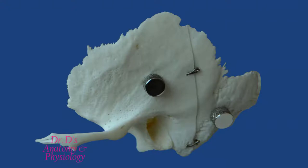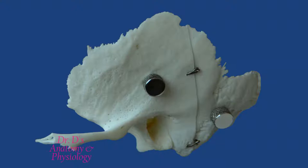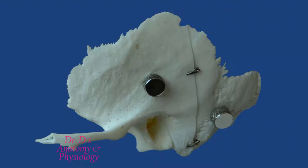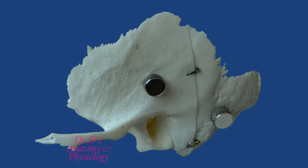The temporal bone is going to be associated with your special senses of hearing and equilibrium. Clinically, it's very important because upper respiratory infections in young children can lead to an infection of a part of this bone called the mastoid process, giving you mastoiditis, which can then lead to more serious complications when the infection gets into the cranium and causes meningitis and possibly encephalitis.